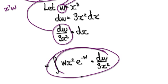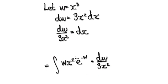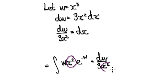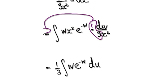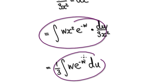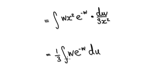So this whole thing here will then become this. We still need to take care of this thing here, but luckily this x squared here will cancel out with this. So this will then become this. So factor out the third here, because it's a constant — that will then give you this. So this whole thing here will then become this. Now it's just a matter of integrating this.